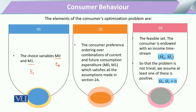In this situation the consumer allocates income only on two commodities. There is always a feasible set constraint. The consumer is endowed with an income — m0 available today and m1 available in the future — and at least one of these should be positive.